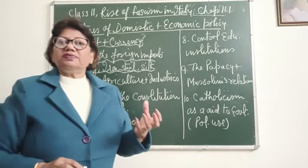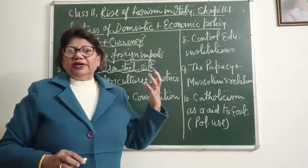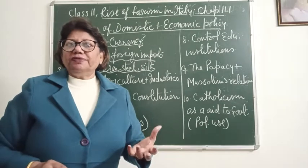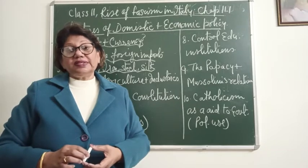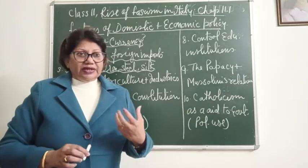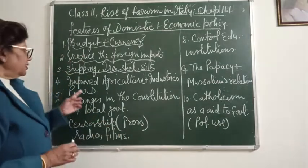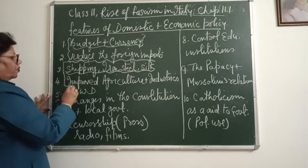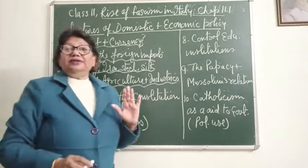These productions were developed so that when steel, iron, silk, and shipping increased, it would help the export system. Due to export, Italians would be independent enough to earn income. The main thing was how to reduce foreign imports — he improved agriculture and industries.